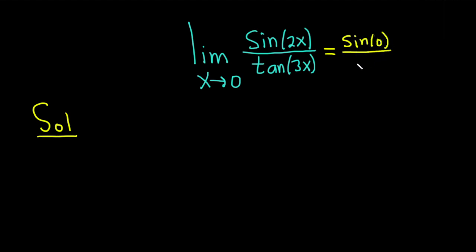Divided by tangent of 3 times 0, we get tangent of 0. The sine of 0 is 0, and the tangent of 0 is also 0, so we get 0 over 0.